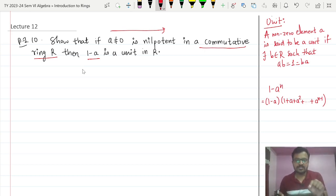For that purpose we will just recall the definition of unit. What is a unit? A non-zero element a is said to be a unit if we are able to find an element b belonging to R such that ab equals 1 equals ba. Then we will say that a is a unit because its inverse exists and the value of that inverse is b.